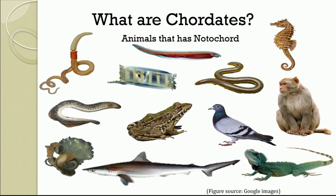What are the chordates? Obviously, all the animals shown here in this slide are referred as the chordates. Then one can ask what exactly chordate means. Chordata is one of the deuterostome phyla which includes a heterogeneous group of animals that differ from one another in many respects.